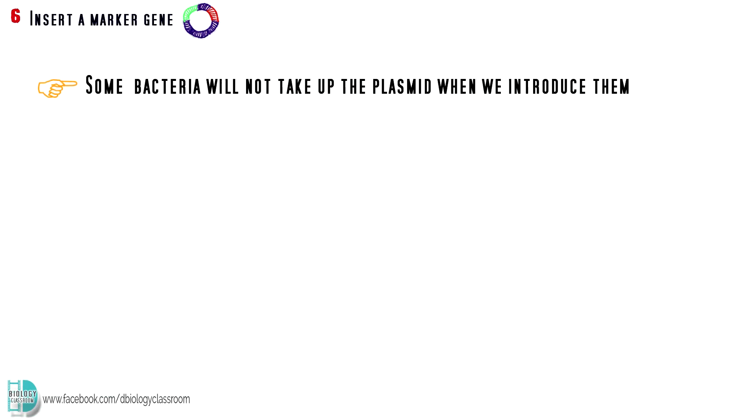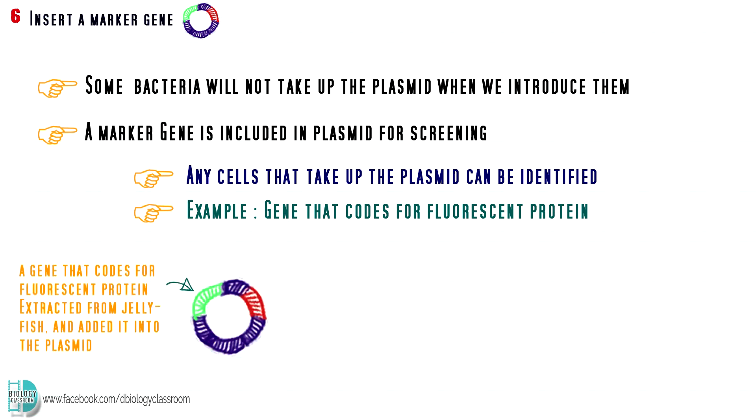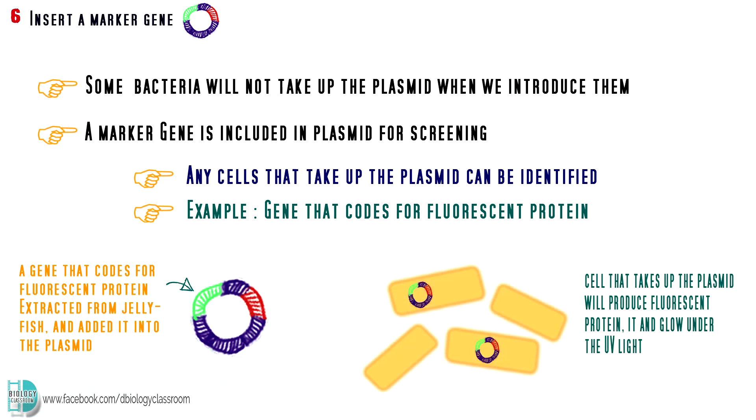Not all bacteria will take up the plasmid when we try to insert them. So, we need a marker for screening purposes. Any cells that successfully take up the plasmid can be identified due to the presence of the marker. A commonly used marker is the fluorescent protein. We extract a gene that codes for fluorescent protein from jellyfish and add it into the plasmid. Any cells that take up the plasmid will then produce fluorescent protein. It will glow under the UV light. So, you can easily identify them.